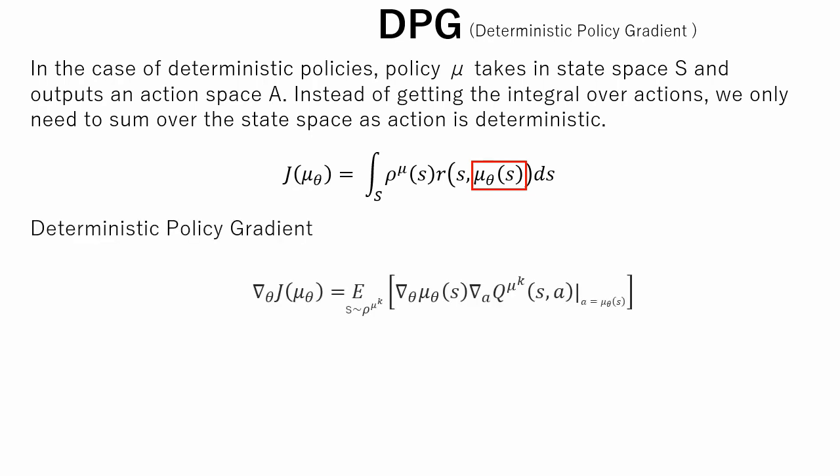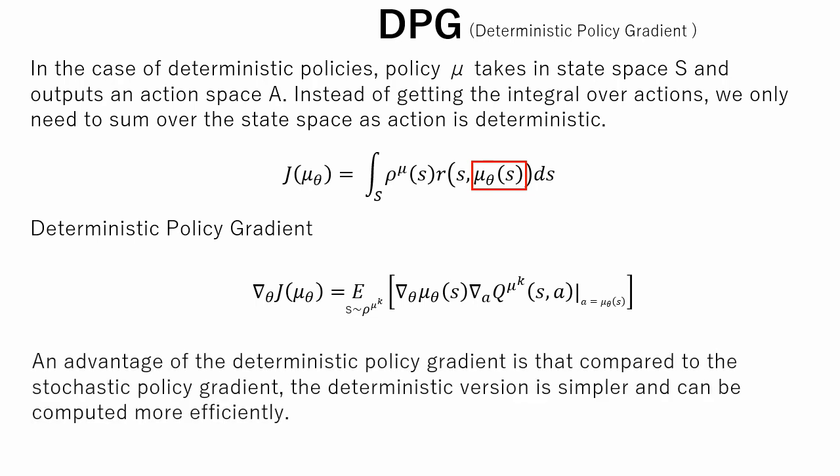This is an expanded form of the deterministic policy gradient. The proof for this deterministic policy gradient is similar in structure to the proof for the policy gradient theorem. An advantage of the deterministic policy gradient is that compared to the stochastic policy gradient, the deterministic version is simpler and can be computed more efficiently.